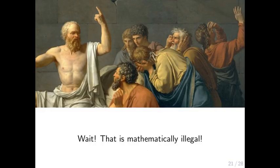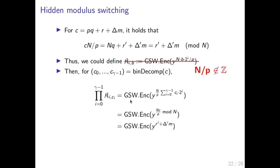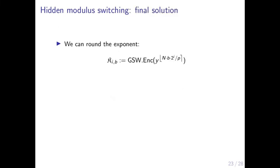But there is another problem: the bootstrapping keys are not well defined, because the fractions we are trying to encrypt in the exponent are not integers — they are rational values. We cannot encrypt these powers of y this way. However, what we can do is round these fractions.